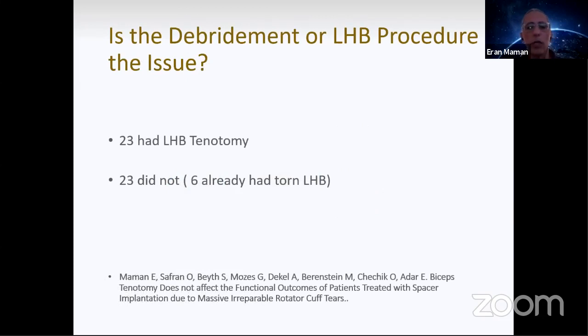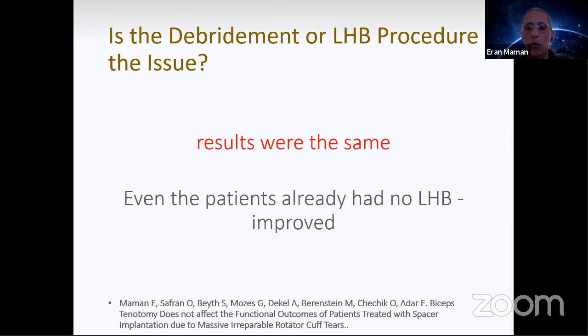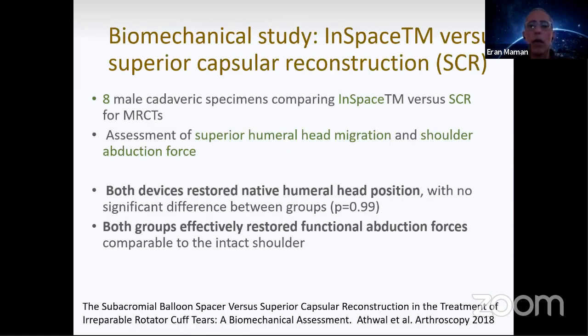Of course you should ask, the French guy would say it's the biceps. Maybe the fact that you kill the biceps, you tenotomize the bicep, that's the difference. We published a study on that. In our multicenter study, 23 had biceps tenotomy. At that time we didn't tenotomize everybody, only when the biceps were really torn or frayed. We had 23 patients that we tenotomized the biceps and 23 that we did not. The results were the same for both groups. So the biceps in our study did not make the change between success or failure.